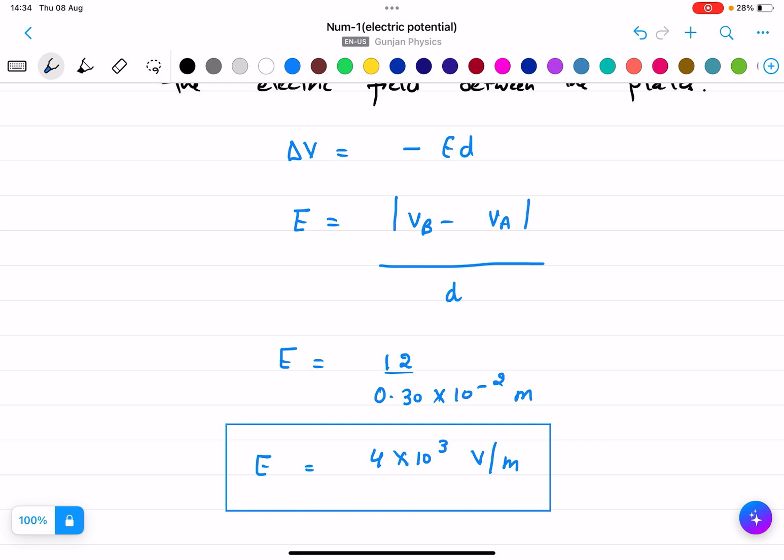And from this formula E = VB minus VA over d because ΔV is VB minus VA. Okay, so this is the answer. Very simple question. Thank you.